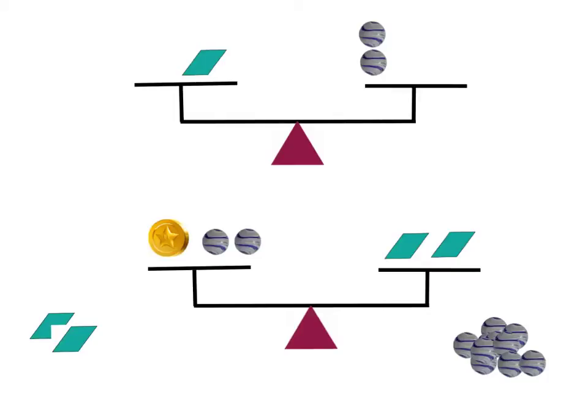Now I'm trying to figure out how many marbles one coin is equal to. Obviously I can't start taking things off yet, so what I need to do is some substitution. I look back up here — one parallelogram equals two marbles — so I'm going to switch out one parallelogram for two marbles.